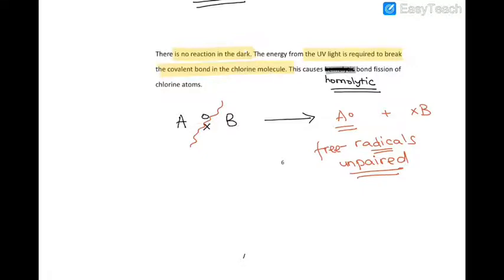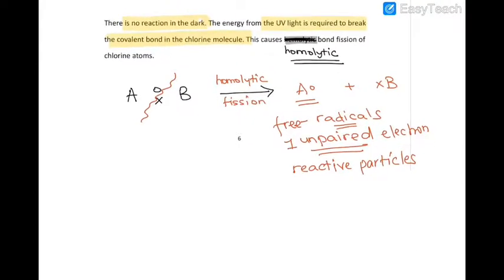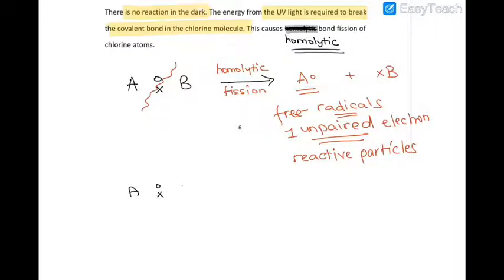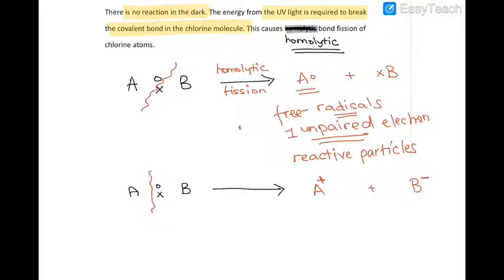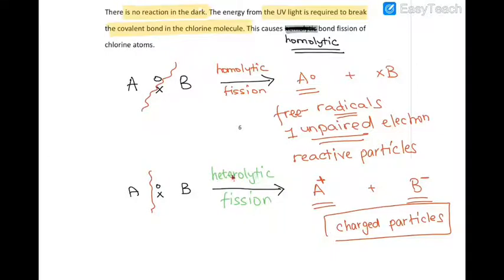Free radicals, because they have that unpaired electron, want to pair it up as quickly as possible, so they are very reactive particles. Another type of bond fission is called heterolytic bond fission, where one of the particles benefits from both electrons. For example, you get A⁺ plus B⁻ — particle B gets both electrons, so one is positively charged and one is negatively charged. Charged particles are produced during heterolytic bond fission.